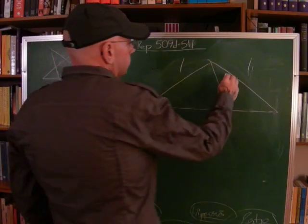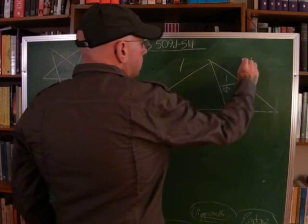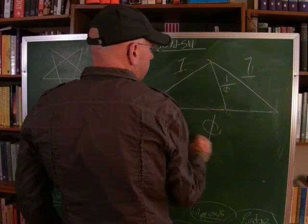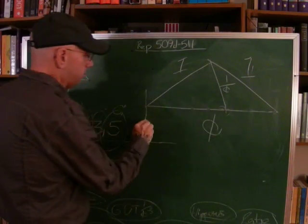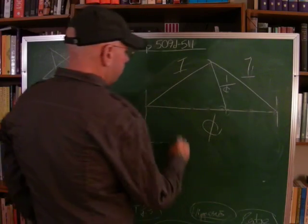What does this have to do with a vertical of 1 over phi? Remember, each one of these, phi, 1, 1, and 1 over phi, forms the basis of Plato's divided line.